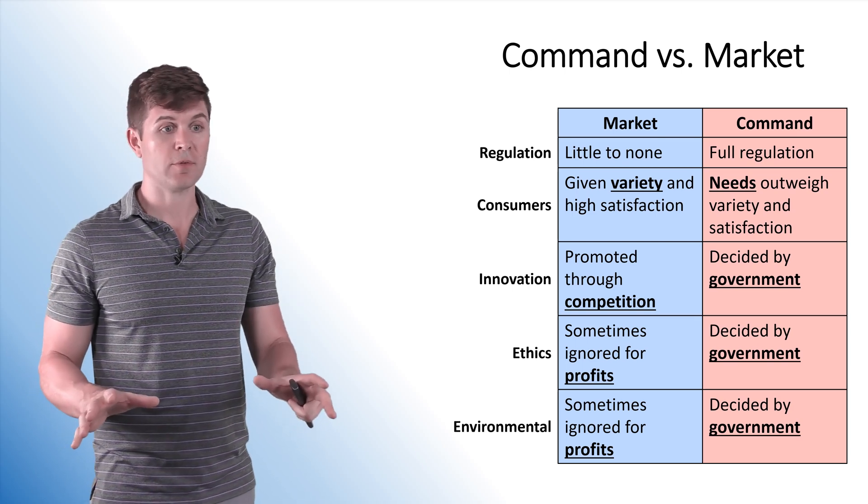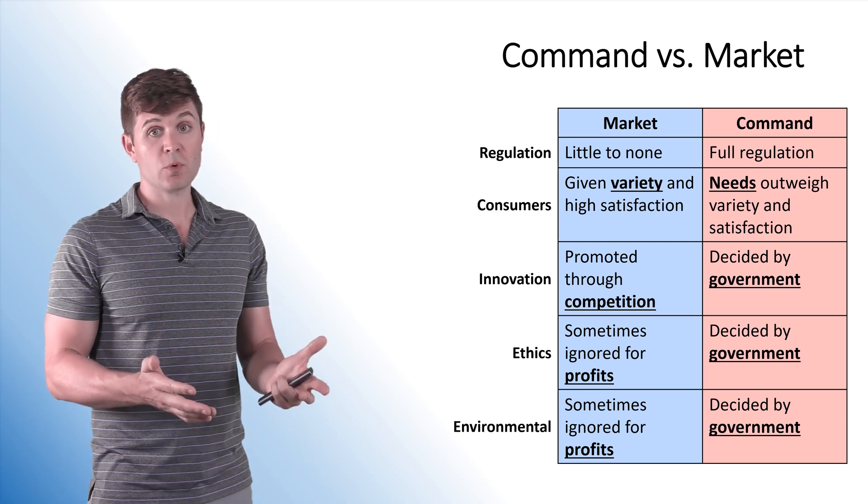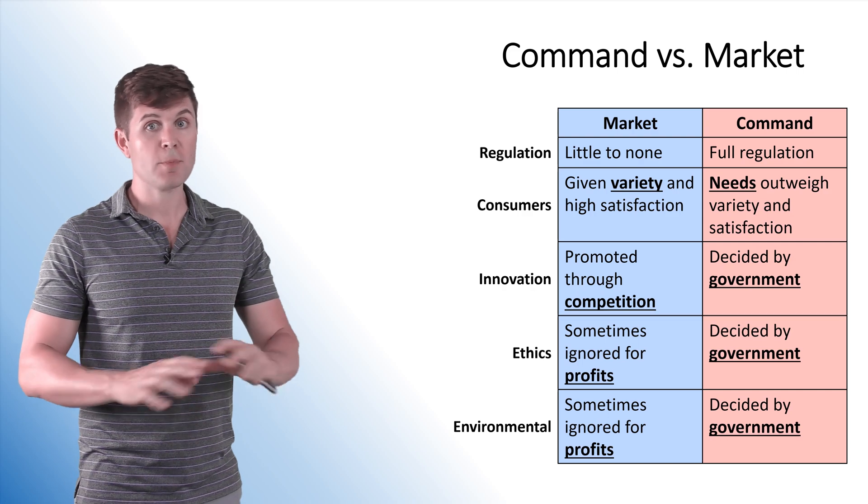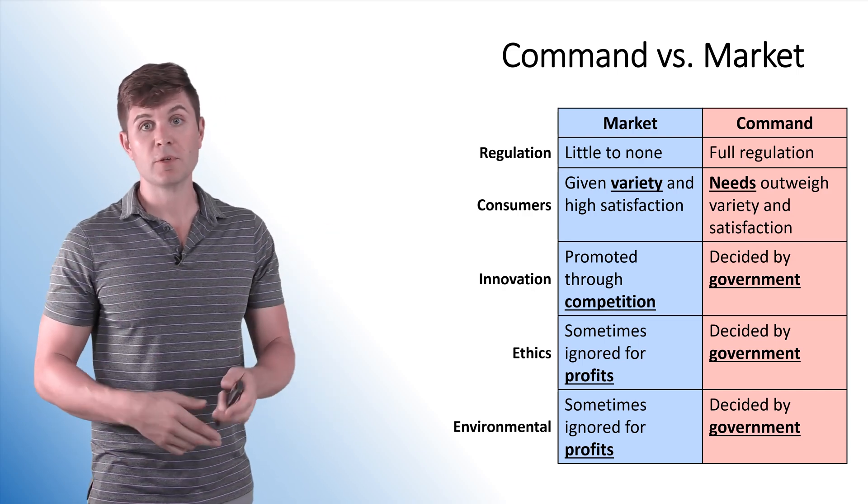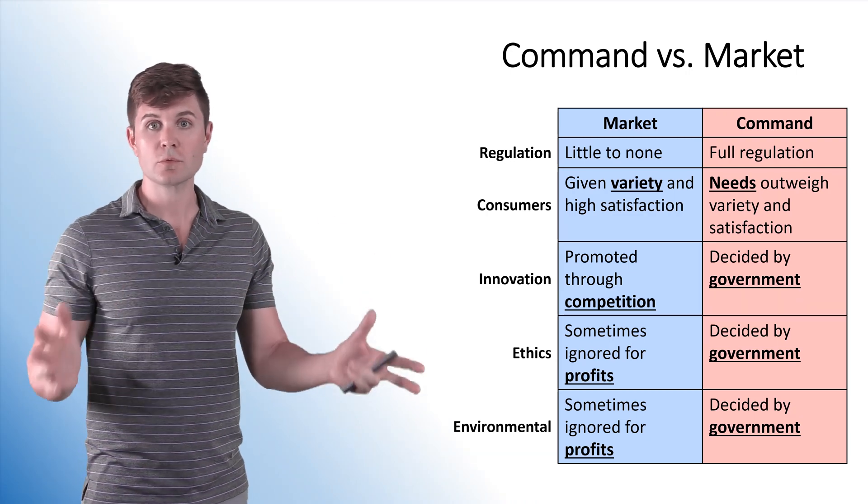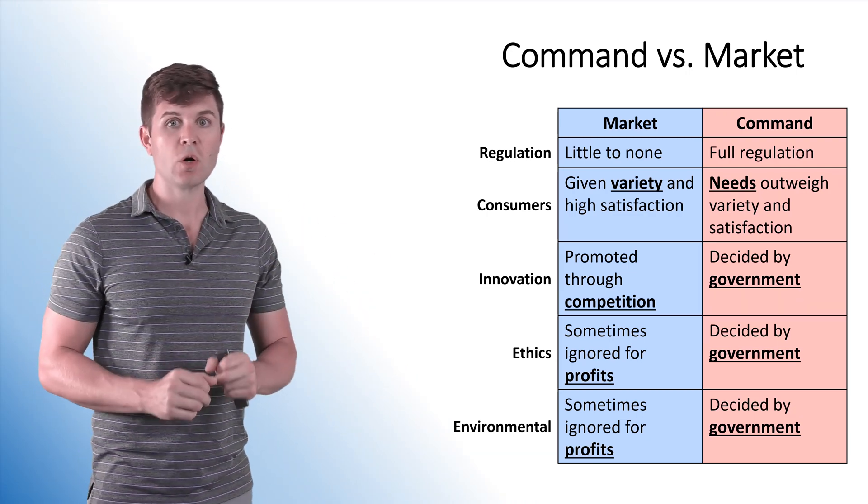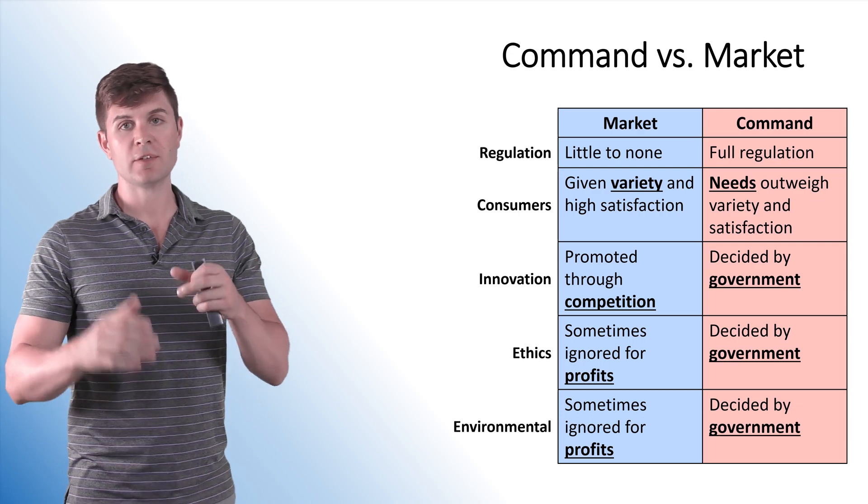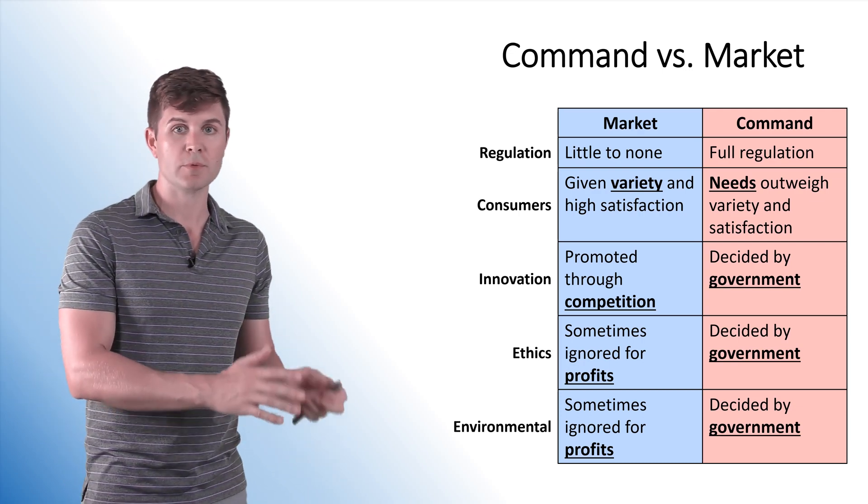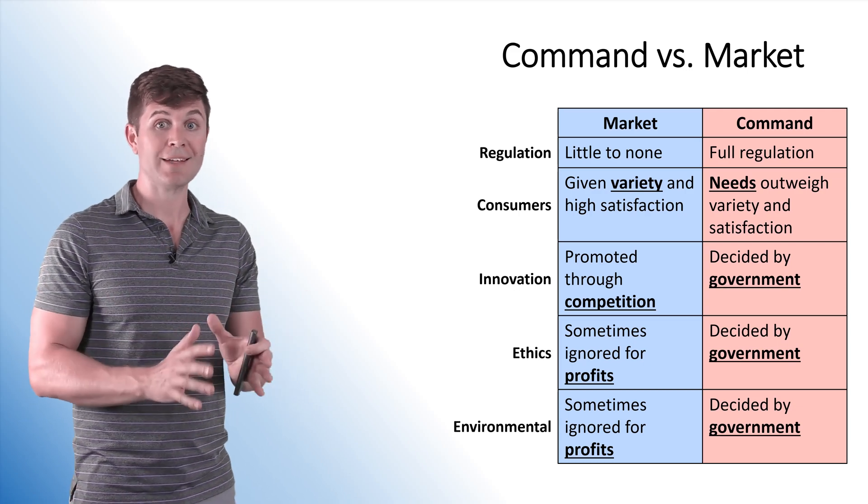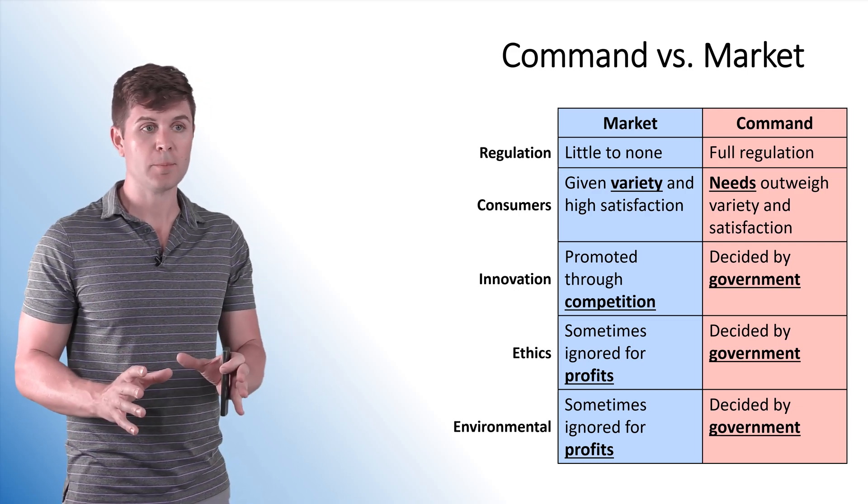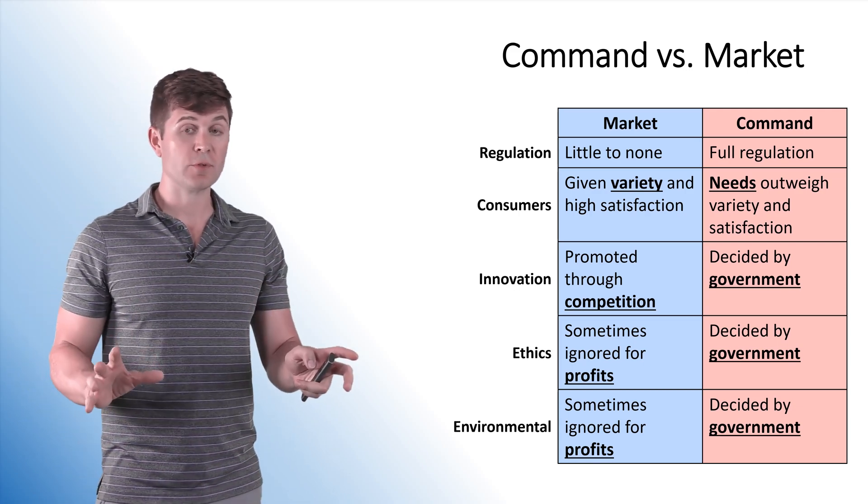The environmental aspect of it all. Now, it's sometimes, once again, ignored for profits in a market economy. A pure market economy, they can do whatever they want to. In a command economy, the government is going to be the one deciding. If they decide we need to worry about global warming, they can make that call. They can start issuing regulations. They can start deciding we're going to stop producing this. We're going to produce more of this. We're going to promote green energy. That command economy has the ability to do that without a whole lot of problem. So that's the big differences right there.